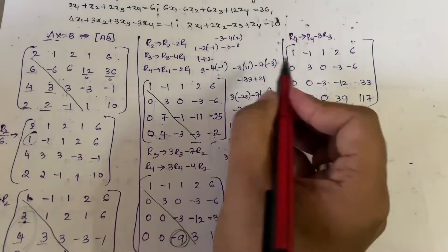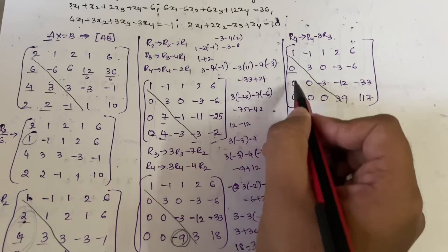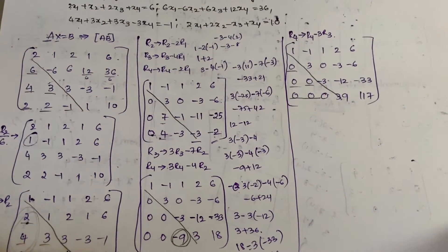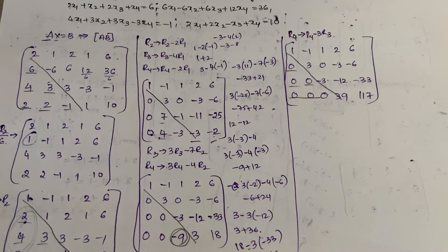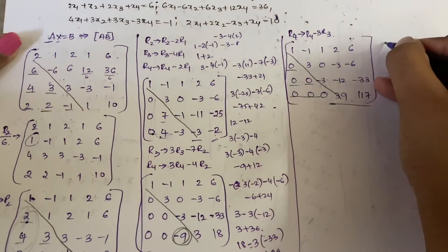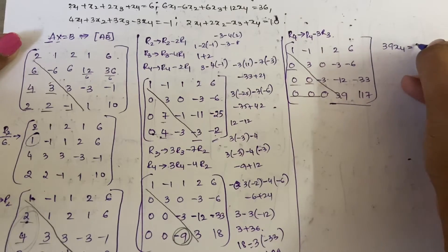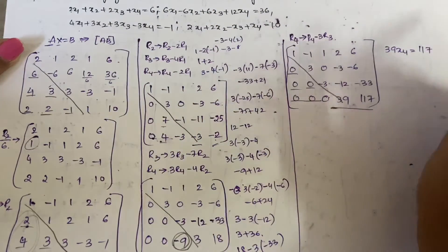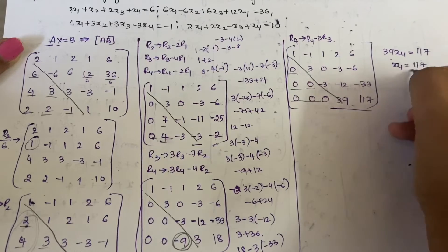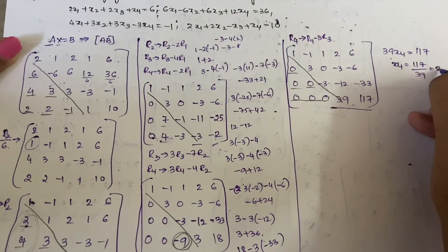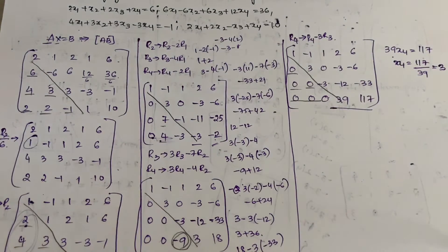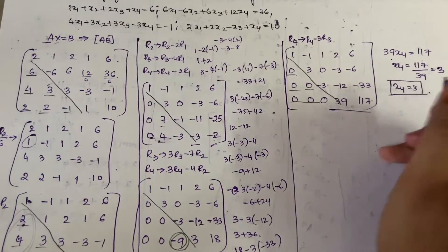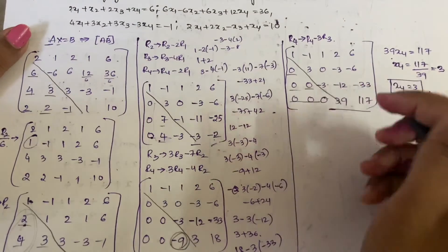We now identify the diagonal as 1, 3, -3, 39. All zeros are in place. We can stop the forward elimination. Now form equations from the bottom row: 39x4 = 117, so x4 = 117/39 = 3.